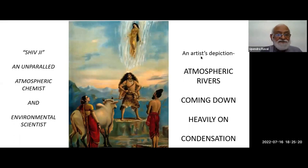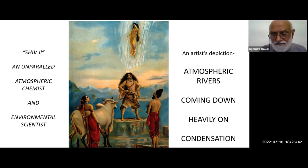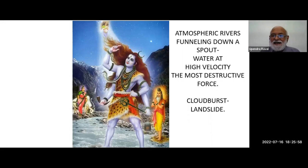I try to study scriptures, religion and tradition and synthesize that information with modern technological findings. Shivji — an unparalleled atmospheric chemist and environmental scientist in my view — came on the planet 15,000 years ago, like you and me. He was there and so it's history, not a myth. There was so much of cloudbursts and all that, so all the rishis requested him to control the flow of rain — atmospheric rivers funneling down with high velocity. I'll show you the velocity in one of my subsequent slides.